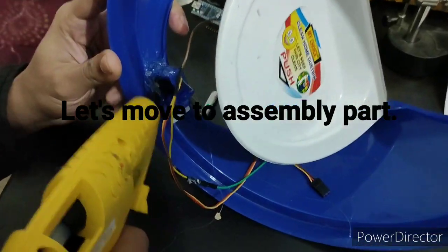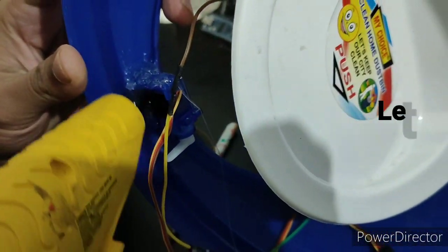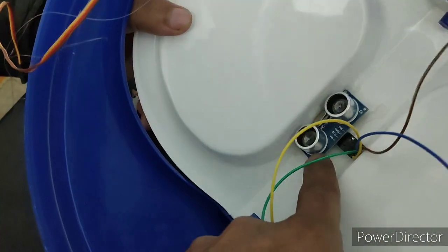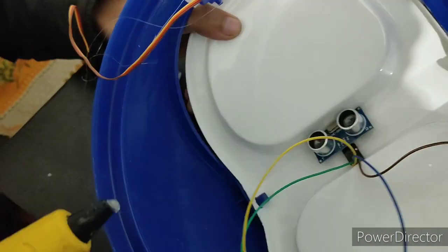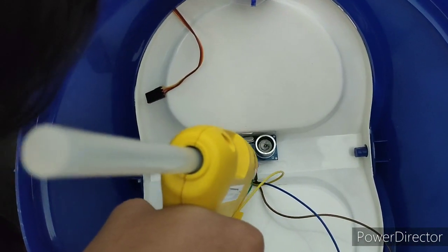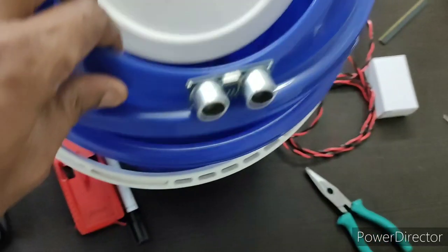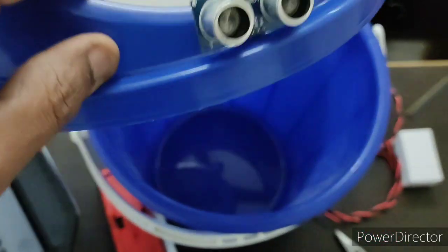Let's see the assembly part. We are fixing one mini servo motor at one end of the lid. For garbage level detection, we are placing one ultrasonic sensor at the center. Another ultrasonic sensor is placed at the front side for object detection. These fittings may be different for you because there are varieties of dustbins in the market.